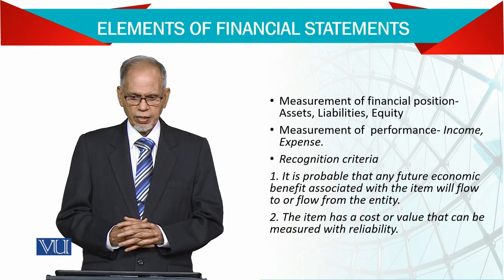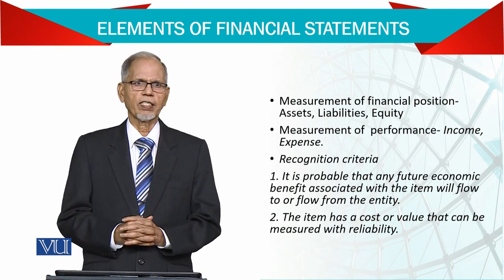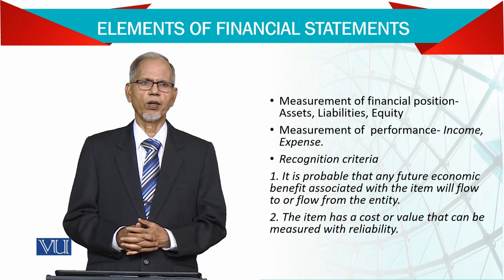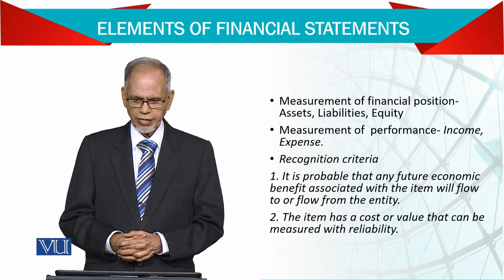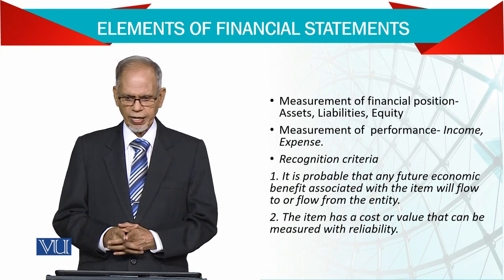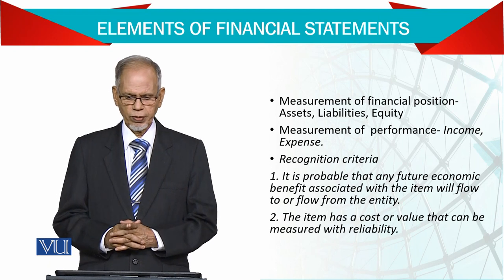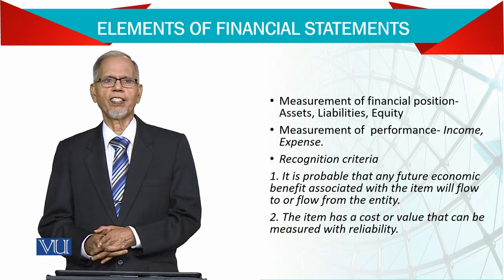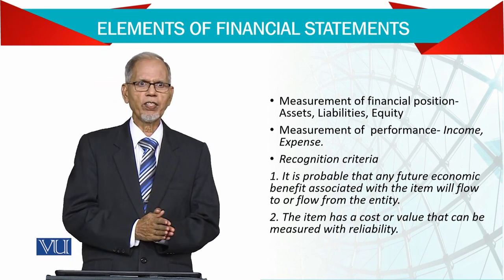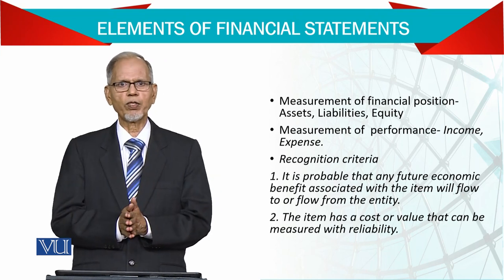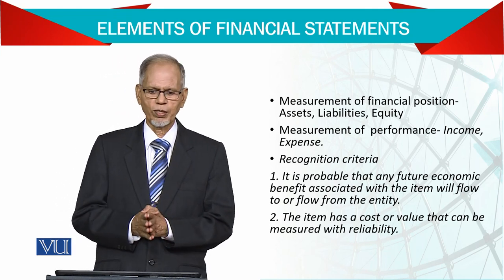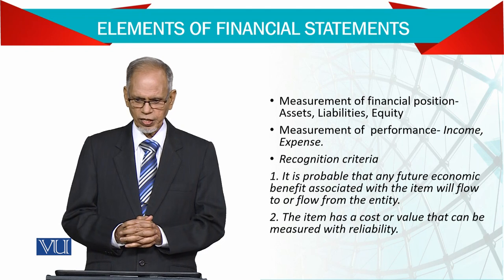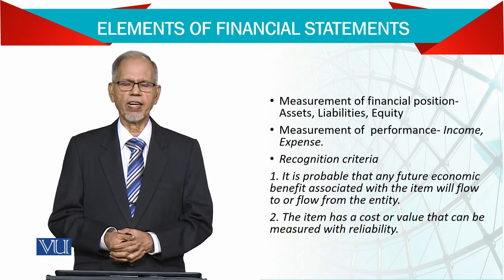The income and expense — those are two main words, but there are also two more: gains and losses. The recognition criteria is that it is probable that any future economic benefit associated with the item will flow to or flow from the entity — any item which brings some inflow or outflow in the future. That is the criteria that should be recorded in the statements. The item must also have a cost or value that can be measured with reliability.